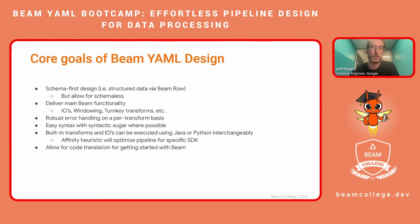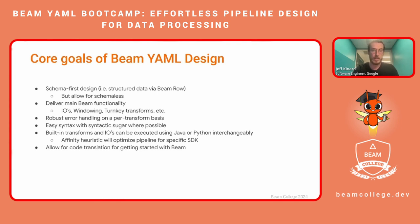We want robust error handling — making sure that per transform, if there are any errors that occur, at least those supported by Beam YAML, there will be error handling so you can post-process those errors, write them to another transform or log them out. We also want easy syntax, meaning a transform may allow for complicated structures like combining from multiple places, but also having a syntactic sugar where if you're doing a simple case, you don't have to worry about all that verbiage. Built-in transforms and IOs means supporting any of the major IOs interchangeably with Java and Python — a transform can be implemented in either SDK, and the user is abstracted away from this. The Beam YAML heuristic will determine the best SDK at runtime to ensure the best performance.